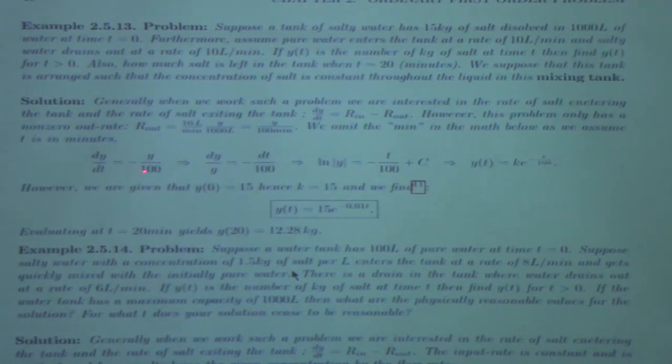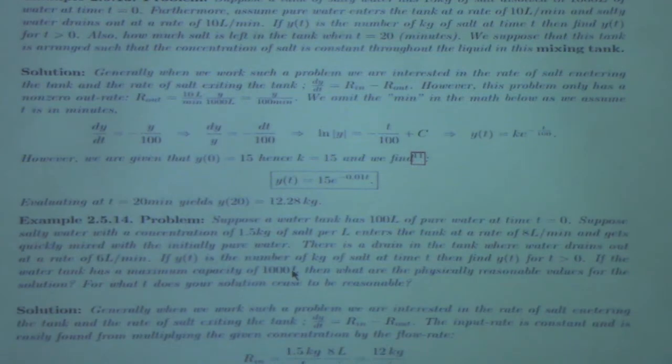So this gives you dy/dt equals to minus y over 100. Please, I like this for a test question. Please, ask me to solve this. Yes, I would like that very much. So we can do that, and you get y(t) is 15 e to the minus 0.01 t. And then to find the amount of salt at 20 minutes, you just plug in the appropriate time, 12.28 kilograms. There's like 3,000 different variations on this problem. I'm interested in none of them.